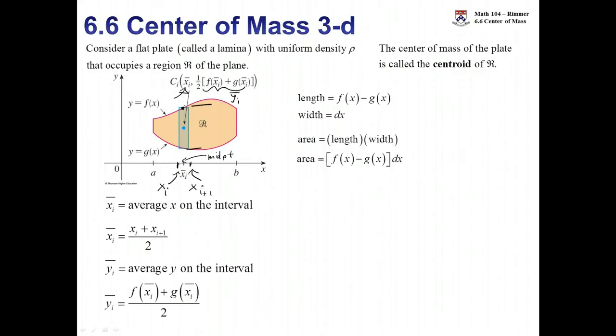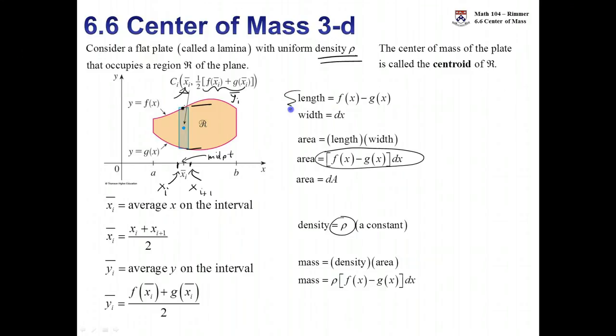Once again as we let the number of rectangles go to infinity, we then will have the area represented by the symbol dA. And then finally we have mass. There's the density constant rho and there's the fact that mass is density times area. So you take the density rho and you take the area and you multiply them to get the mass. These are going to help us understand why we have the formulas that we have for the center of mass in 3D.